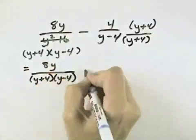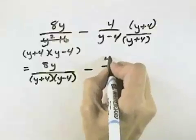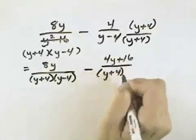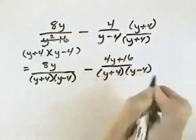But in the second fraction, we can multiply out the numerator to have 4y plus 16 over our new common denominator that contains the factors y plus 4 and y minus 4.